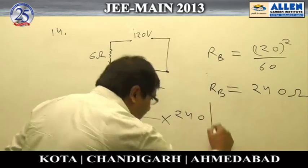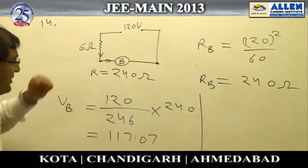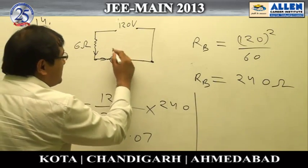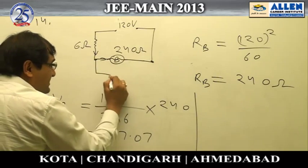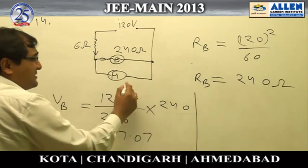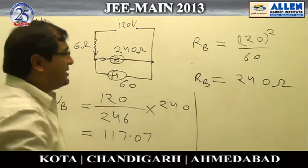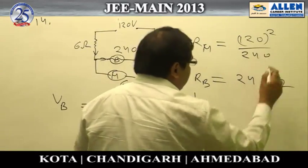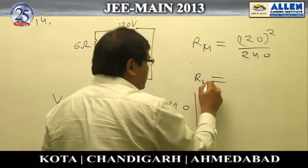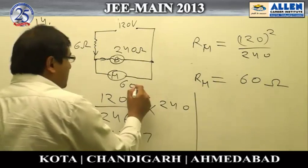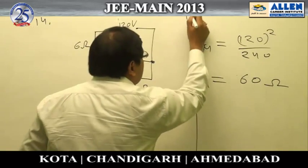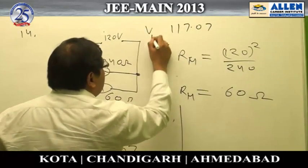Now when a heater is added in parallel with the bulb, the bulb has resistance 240 ohm. The heater's resistance can be calculated similarly: rated at 120 watts with 240 volts, giving a heater resistance of 60 ohm. We then need to recalculate the voltage drop across the bulb in this new configuration.